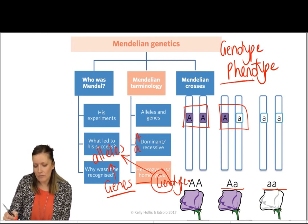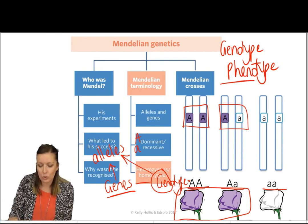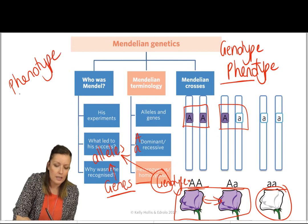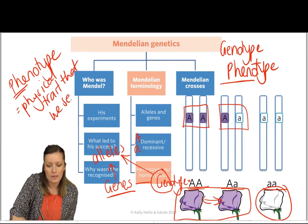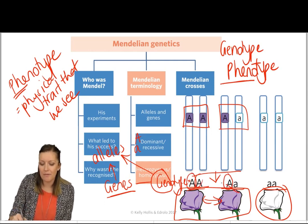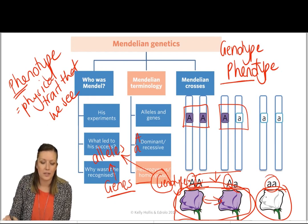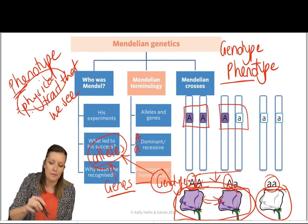What about phenotype? The genotype of the three flowers is different; however, two of the flowers have the same outward appearance — both are purple — whereas the third is white. Phenotype, looking at the 'ph', is the physical trait that we see. Even though these two flowers have different genotypes, because they both have a big A in their genotype, their phenotype is the same — it is the dominant phenotype. The little a little a flower has a different phenotype, being white. So genotype is our allele combination, and phenotype is the physical traits that we see.